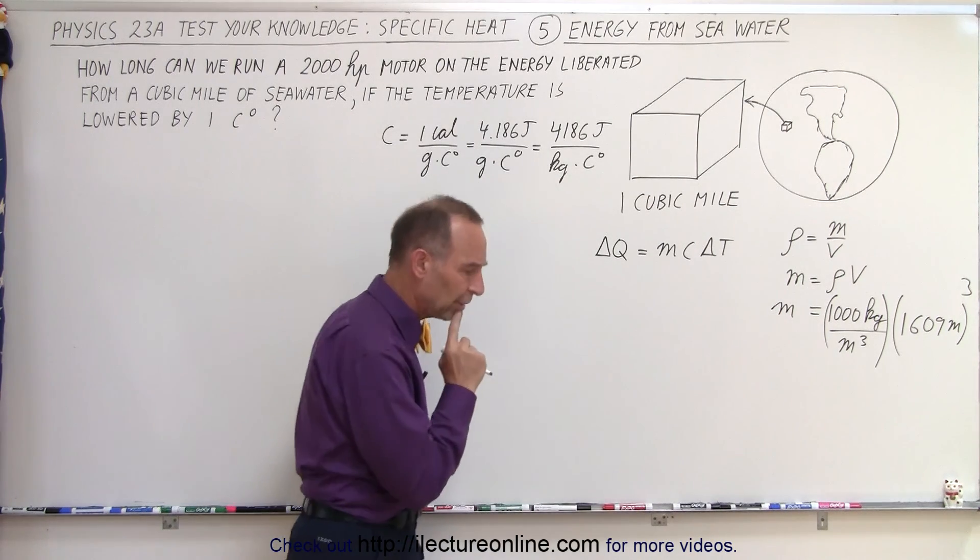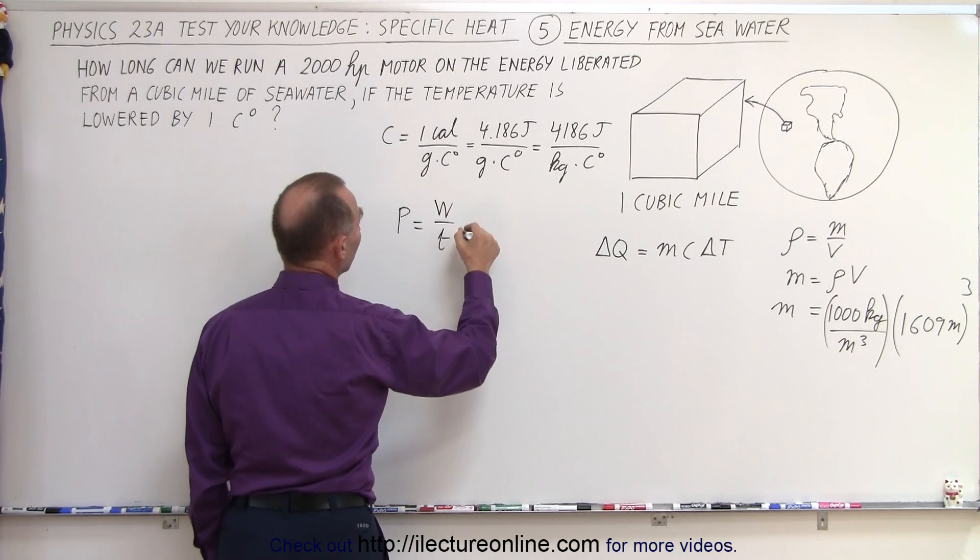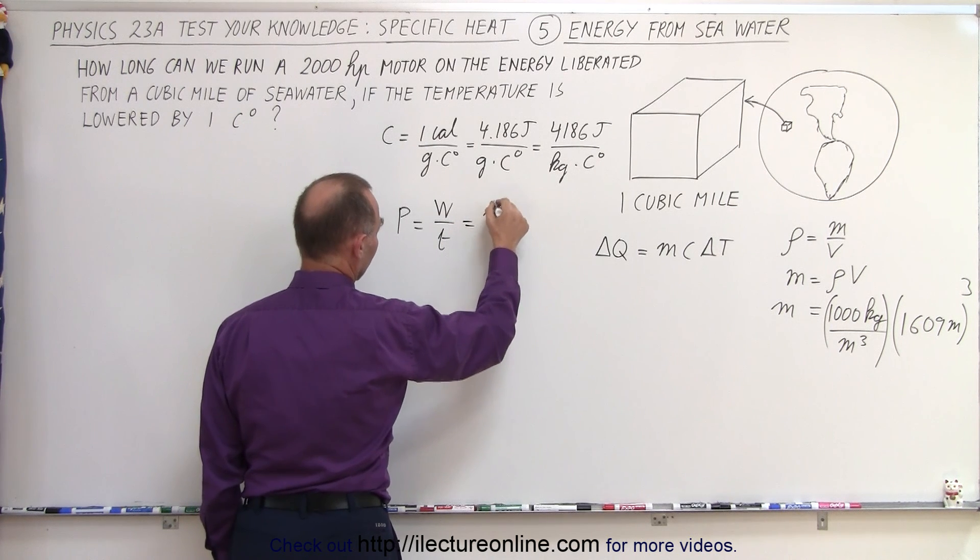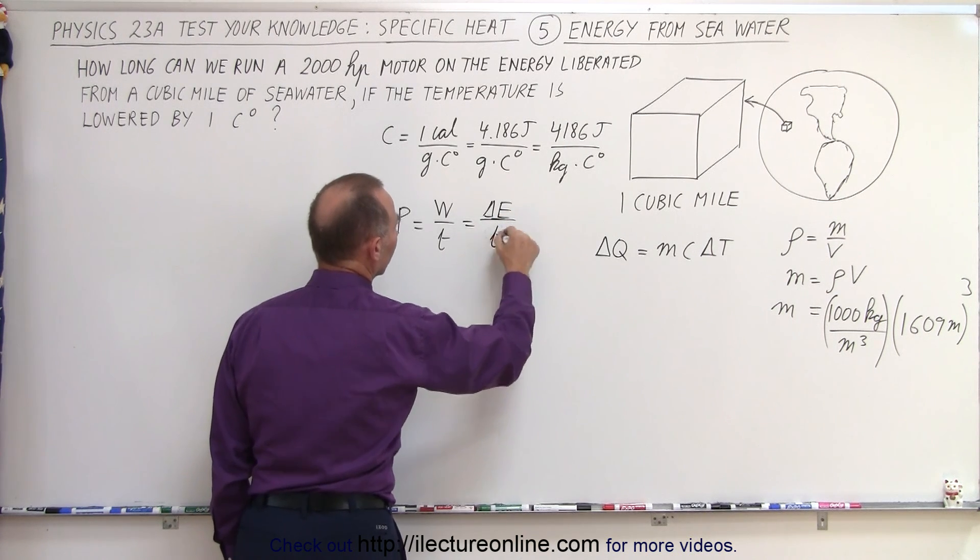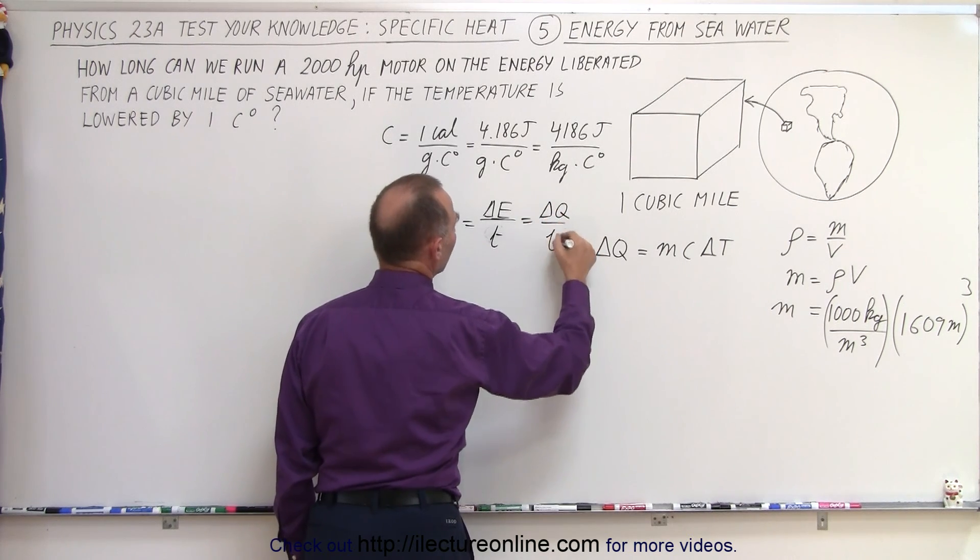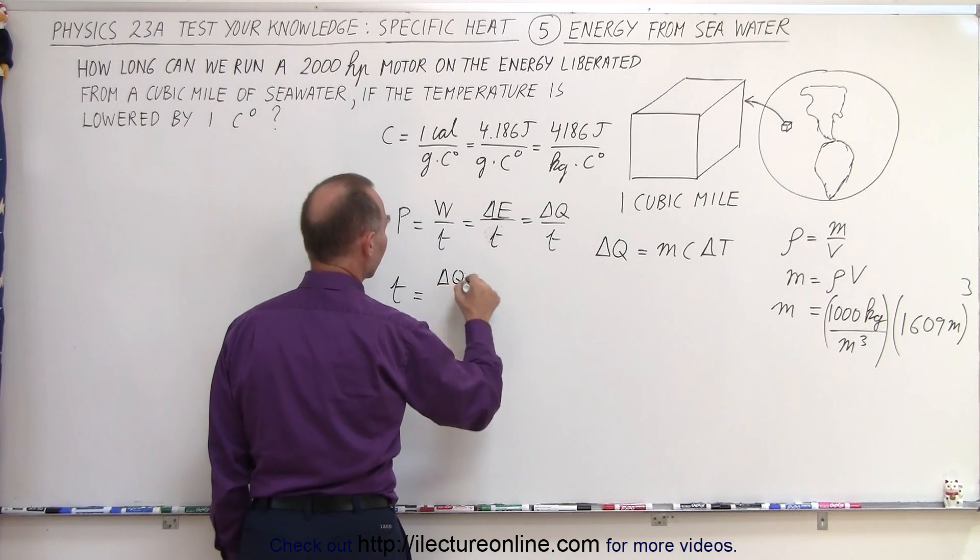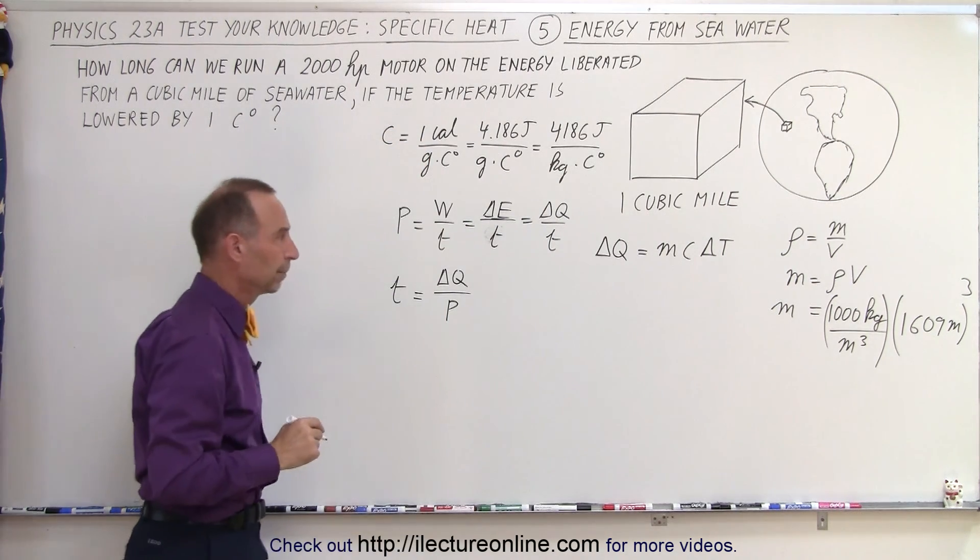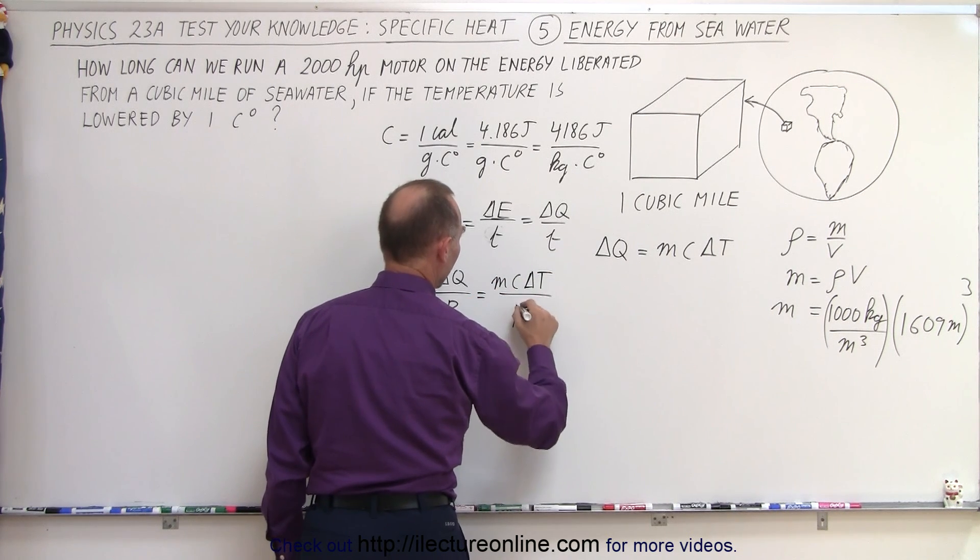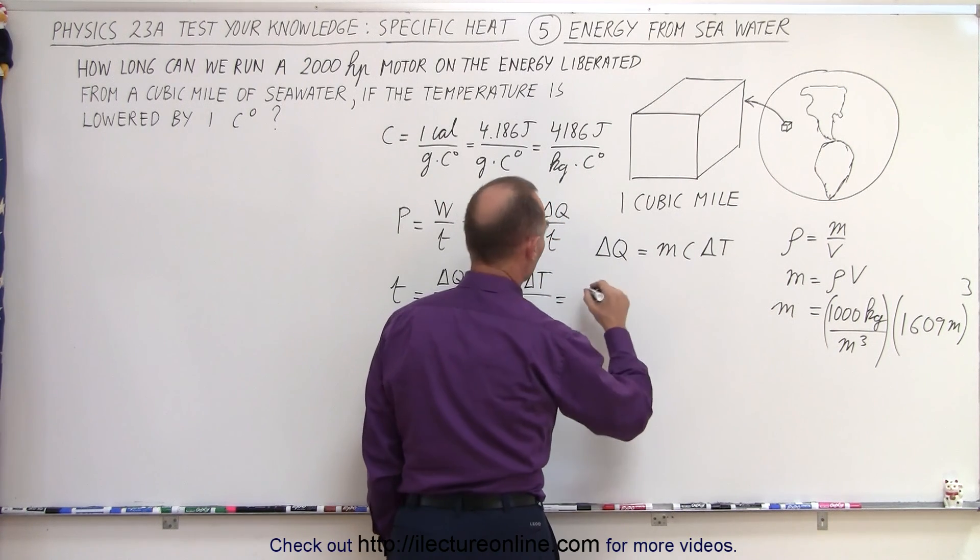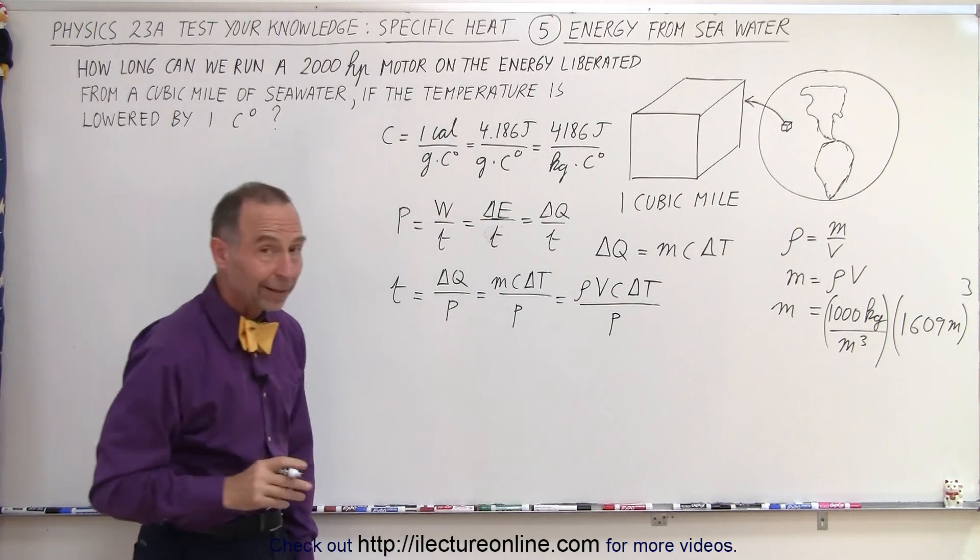So that would be the heat generated. Now we need the power equation. The power is equal to work divided by the time or the energy, delta energy over time, or we could say delta Q over T. Since we're looking for the time we can then say that the time is equal to the amount of heat liberated from the seawater divided by the power required by the motor. Now the delta Q can be written as MC delta T divided by the power. In this case the mass is going to be equal to the density times the volume times C times delta T divided by the power. I think we're getting close now.